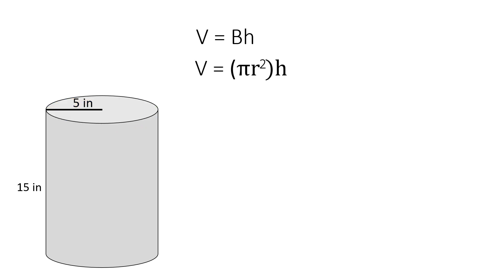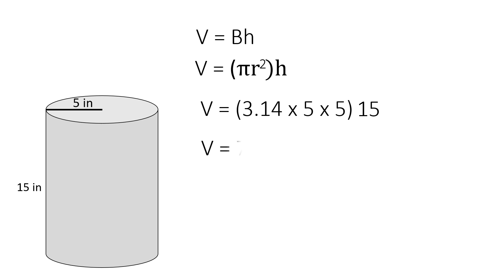So we will take 3.14, which is pi, times the radius squared — 5 times 5 — times the height, 15. 3.14 times 5 times 5 will equal 78.5, multiplied by the height. And the answer is 1,177 inches cubed.